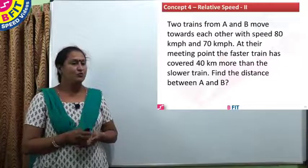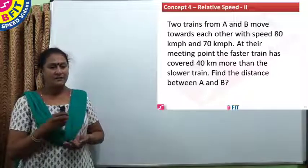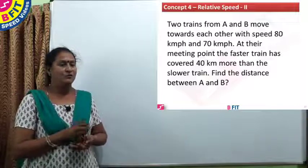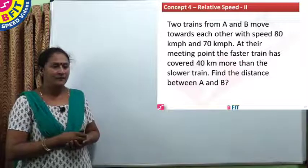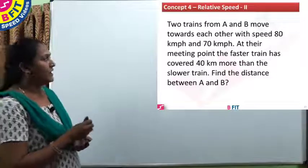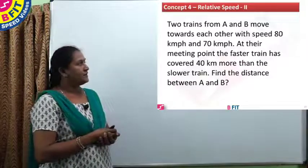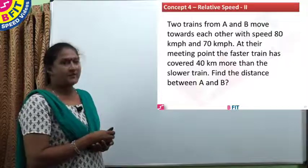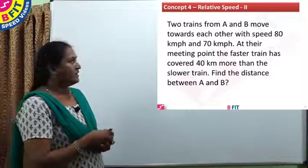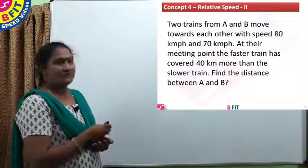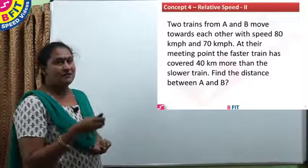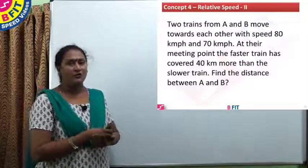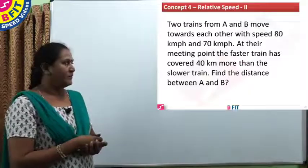Two trains from A and B move towards each other at 80 km/h and 70 km/h. At their meeting point, the faster train has covered 40 kilometers more than the slower train. Find the distance between A and B. The train from A has speed 80 km/h and the train from B has speed 70 km/h. Since the train from A is faster it will cover more distance.